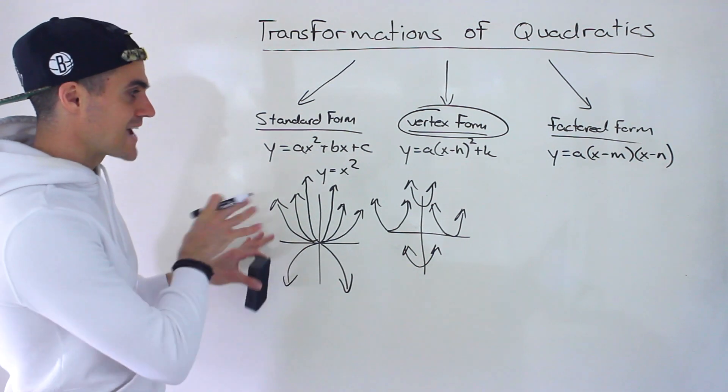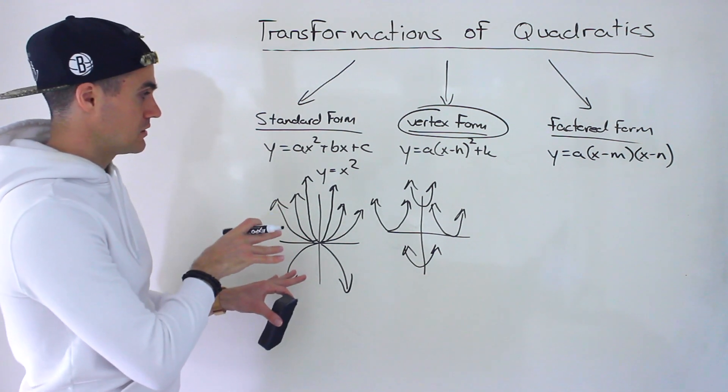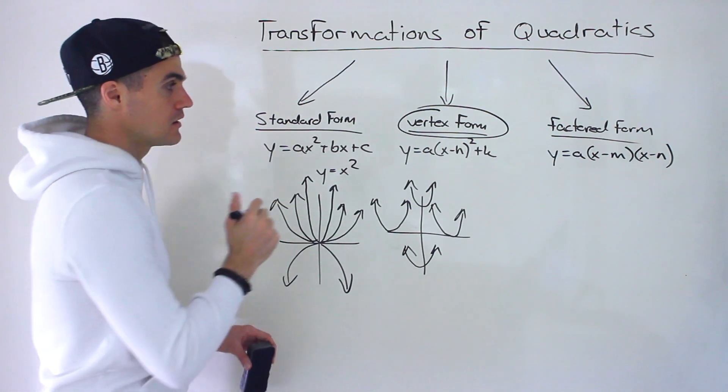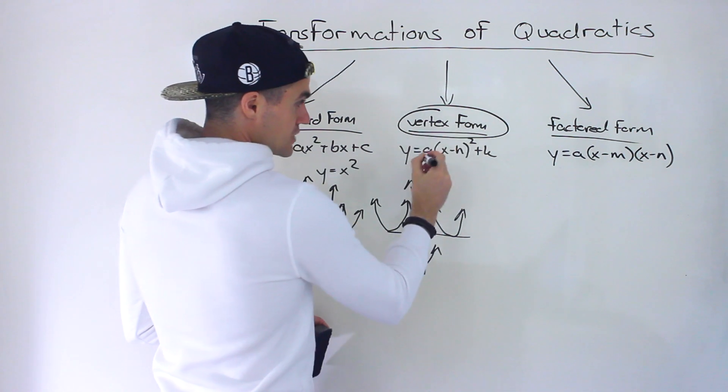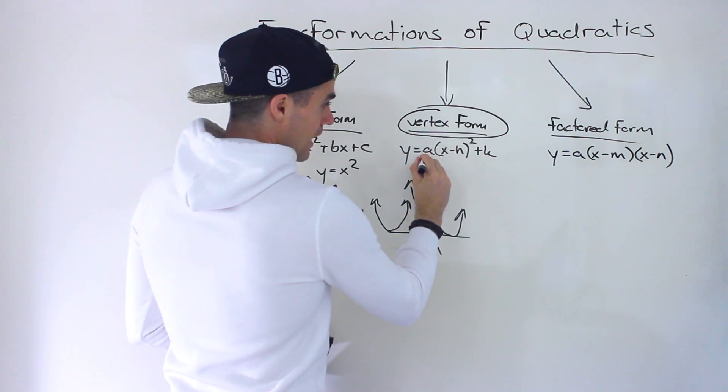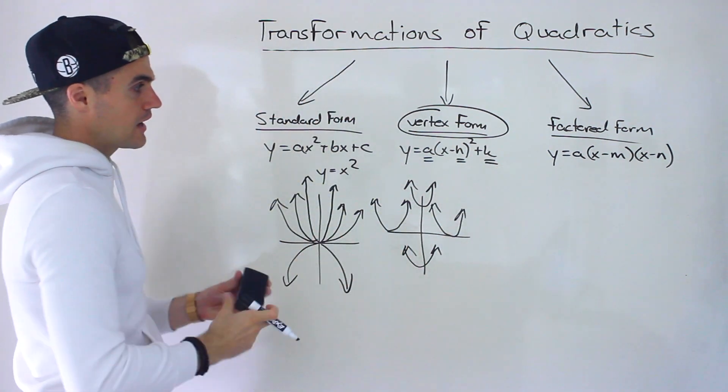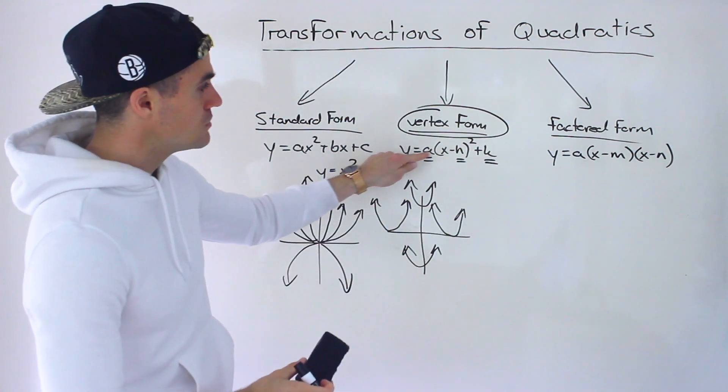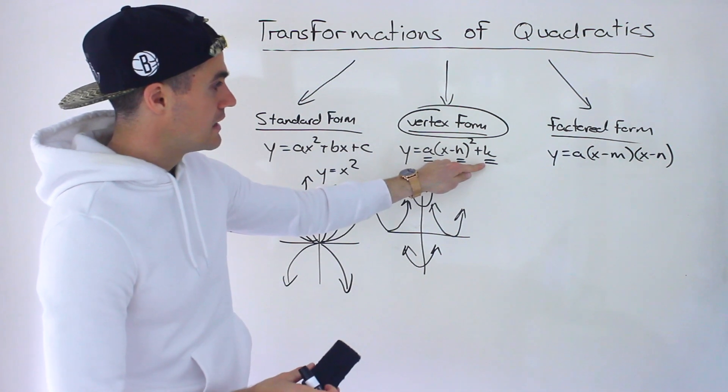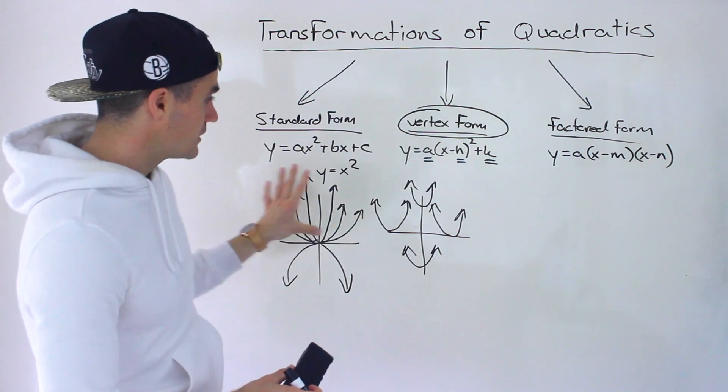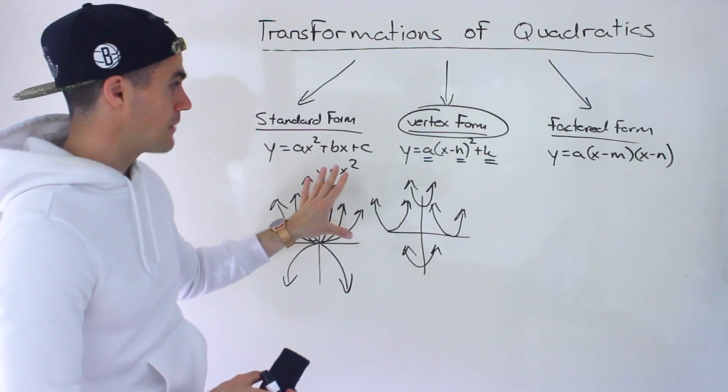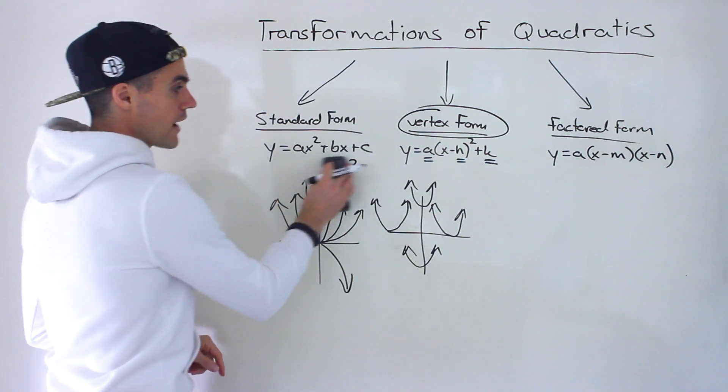And what determines the type of transformation that happens on y equals x squared is in this vertex form, these three values here: this a, this h, and this k. Depending on the type of values that these take, that's going to determine the type of transformation that happens on a quadratic y equals x squared.